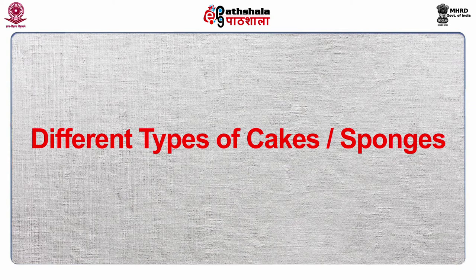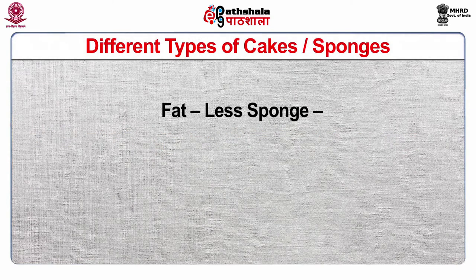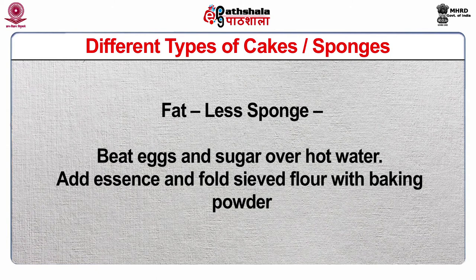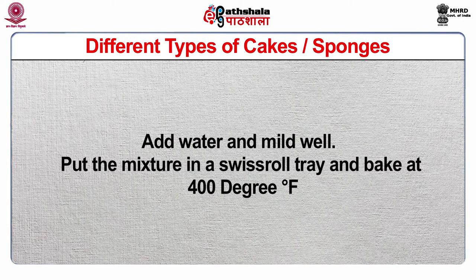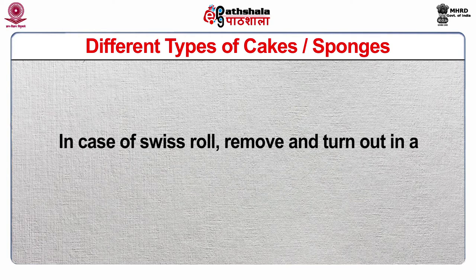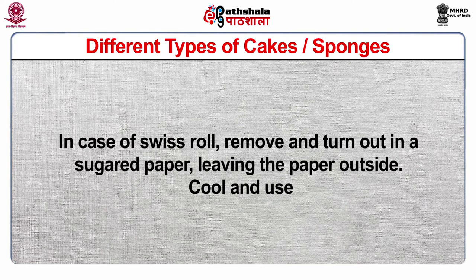Now I am going to discuss the different types of cakes and sponges. The first method is fat-less sponge: beat eggs and sugar over hot water, add essence and fold, sieve flour with baking powder, add water and mix well. Put the mixture in a Swiss roll tray and bake at 400°F. In case of Swiss rolls, remove and turn out on sugared paper, leaving the paper outside to cool and use.